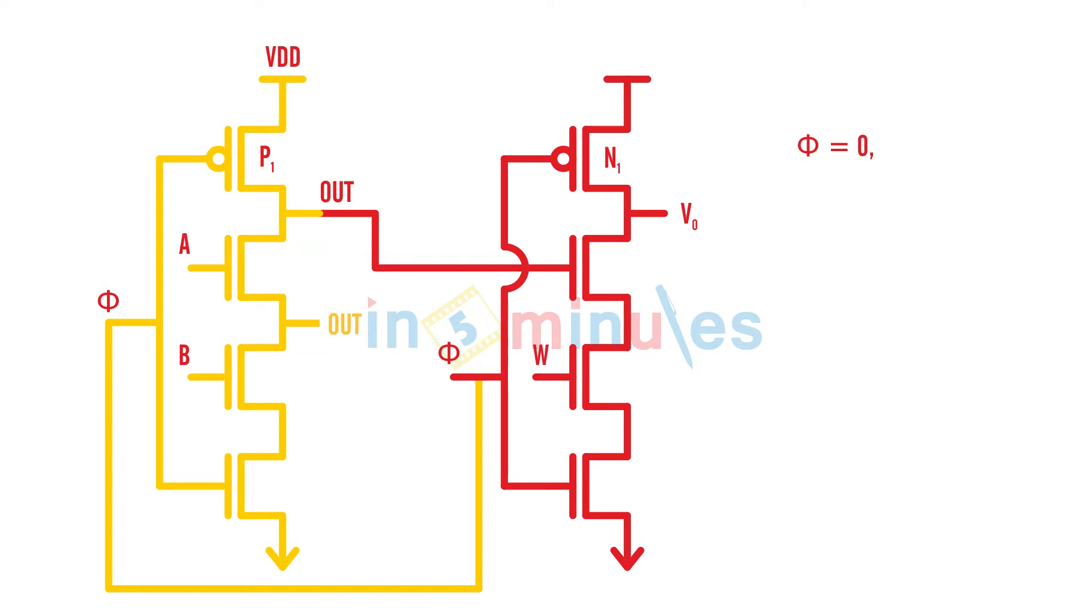So out would be VDD and so would be VO, which is also equal to VDD. So everything is fine in pre-charge phase—there is no problem. But if it's an evaluate phase, Y equal to 1, and if my A is 1 and B is 1...